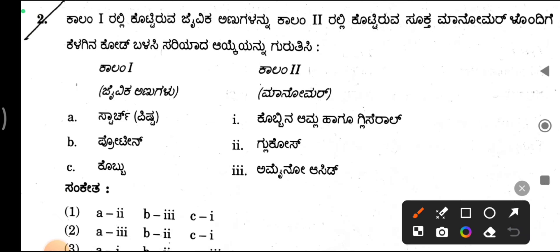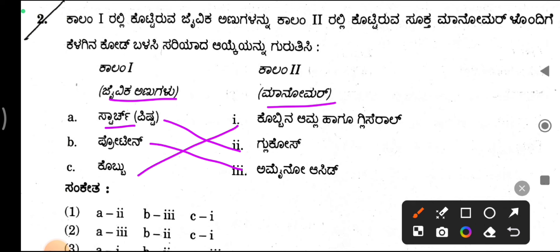This is column 1 and column 2. This is the star, this is glucose, and this is the amino acid. So the correct answer order is 2, 3, 1. Option 1 is correct.